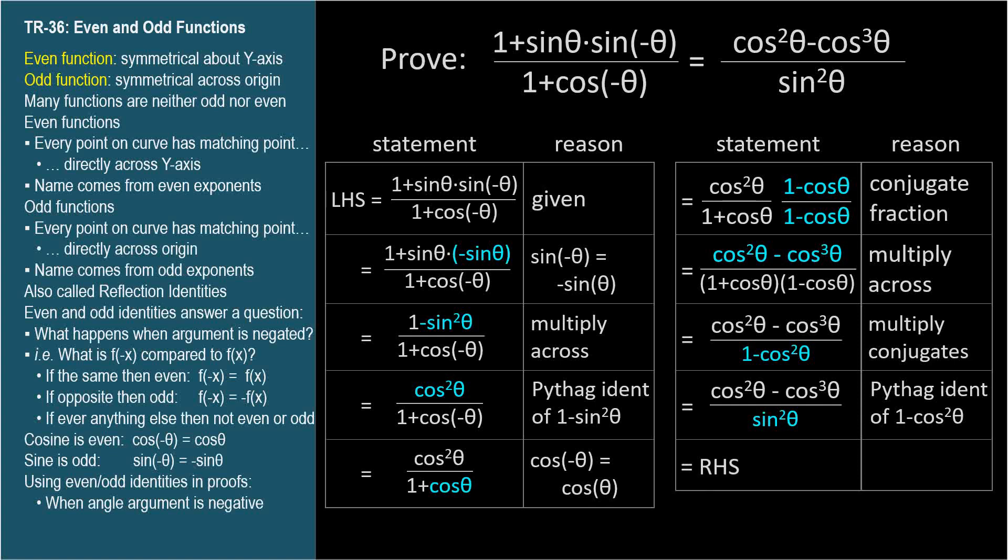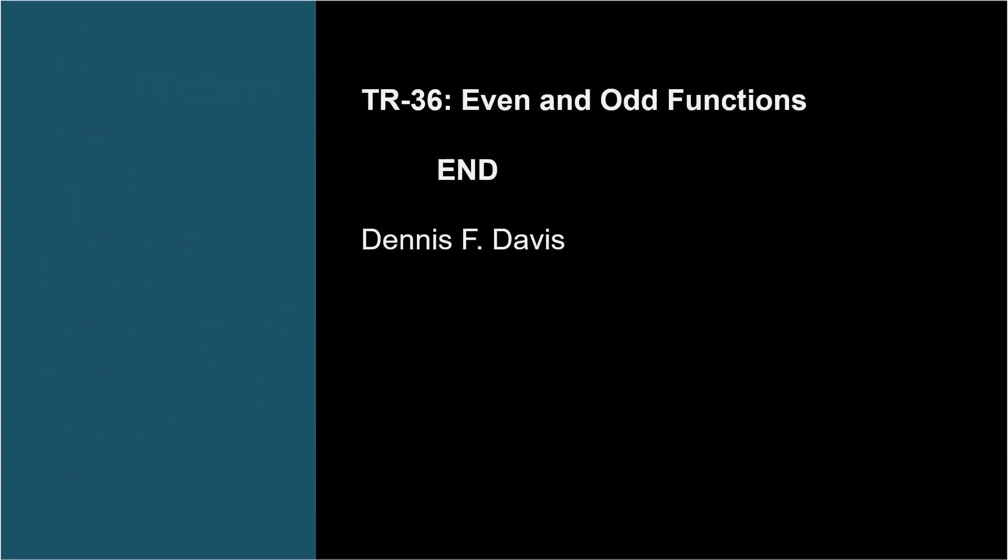We used reflection identities twice in this proof. If you see a negative angle, that's a strong indicator to replace it. Replace cosine negative theta with cosine theta, and replace sine negative theta with negative sine theta. There are also reflection identities across different axes. We'll cover them in TR-37.